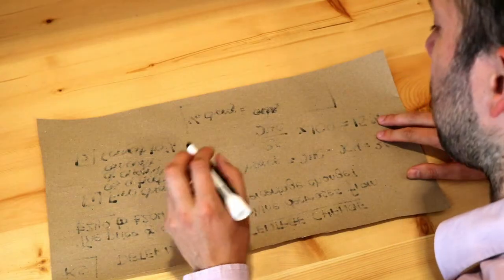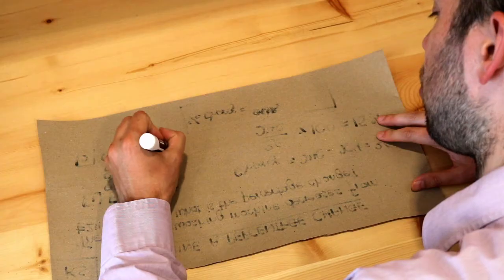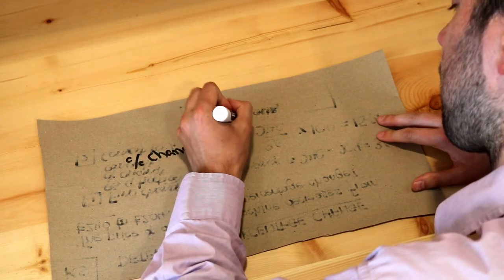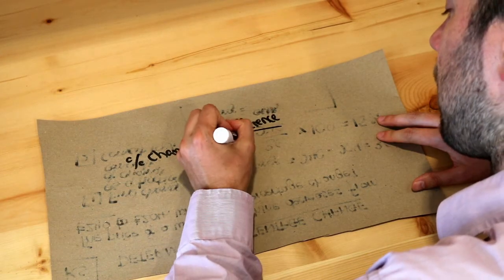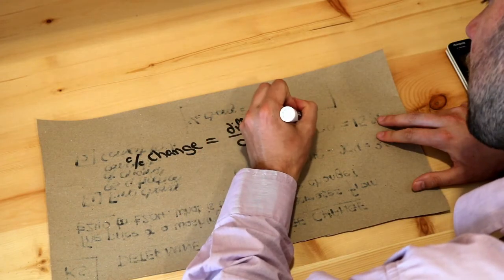And if you don't want to have to remember this method in words then the formula for percentage change is this. So percentage change is equal to the difference, so the actual change, divided by the original amount and times by 100. And that's exactly what we did.